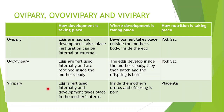For viviparous: the eggs are fertilized internally and development takes place inside the mother's uterus, and the offspring is born. The nutrition is now taking place through a placenta. You can see that ovoviviparous is almost an in-between stage between oviparous and viviparous — it shares being fertilized internally and kept and developed inside the mother's body with viviparous, but also shares egg hatching and nutrition through a yolk sac with oviparous.